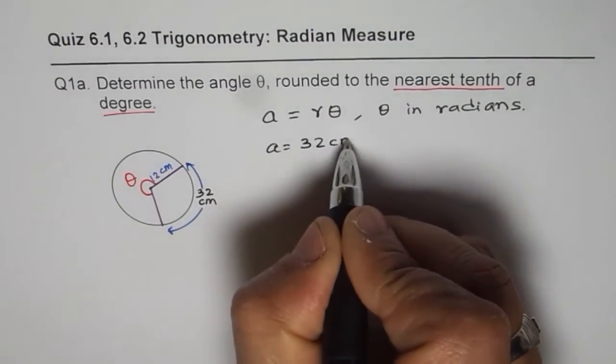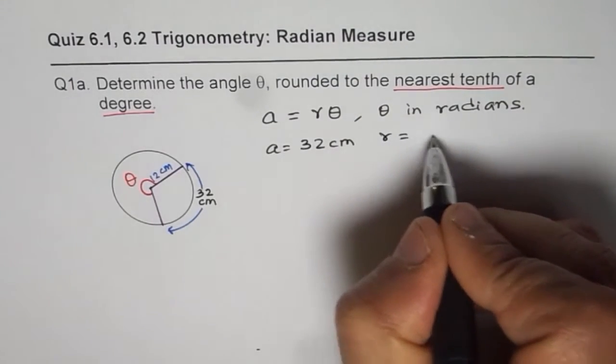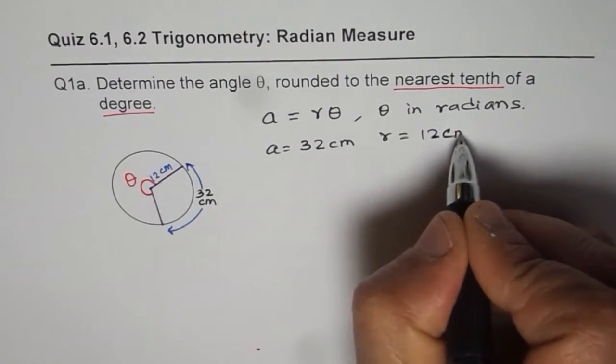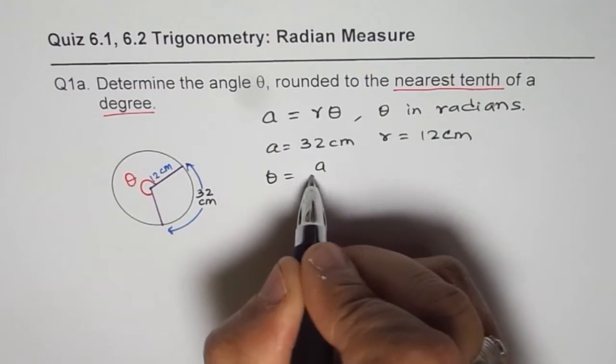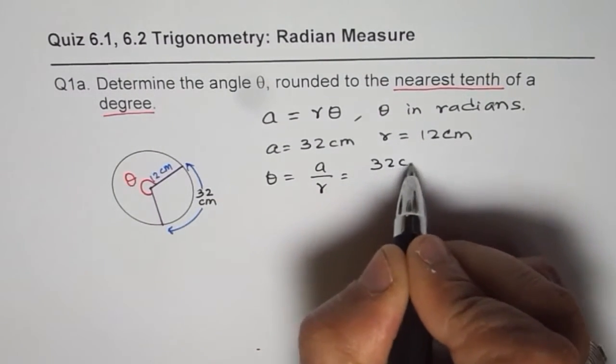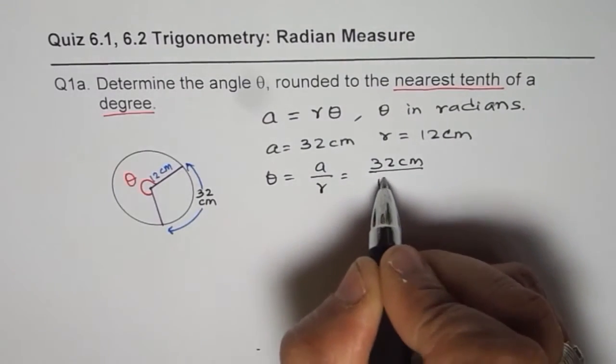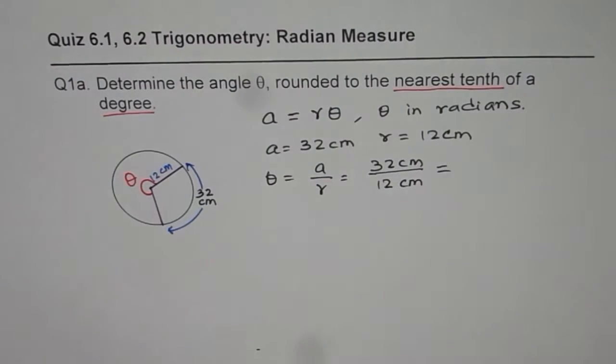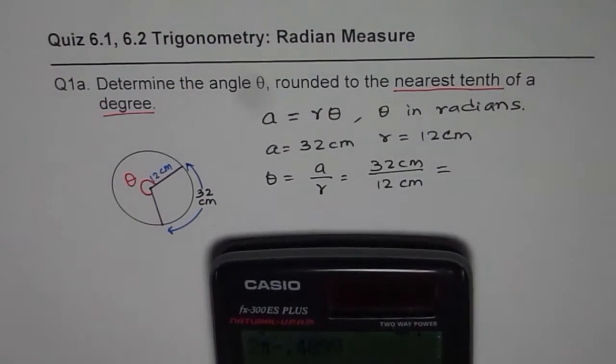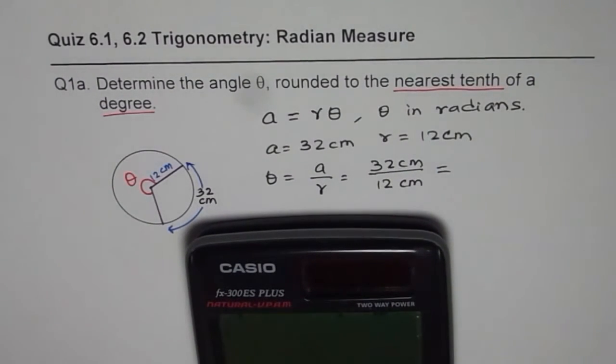32 centimeters, radius is 12 centimeters, and so we can write theta as equals to a over r, which is 32 centimeters divided by 12 centimeters. So that gives you, we can use the calculator, and 32 divided by 12, centimeters cancel, we get 2.666.